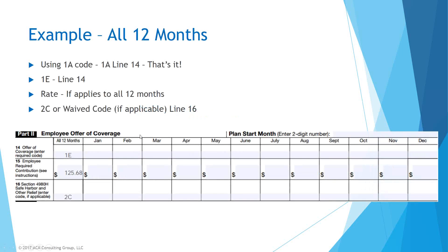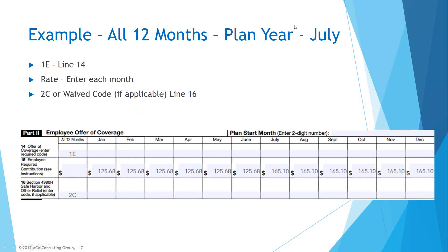Getting into examples: if an employee had the same offer throughout all 12 months at the same rate and enrolled all 12 months, you can use the all-12-months box. For a non-calendar plan year that changed in July, if the employee had the same type of offer and enrolled throughout the entire year, you can't use the all-12-months box for line 15 because the rate changed in July — just update the rate for that line starting in July.